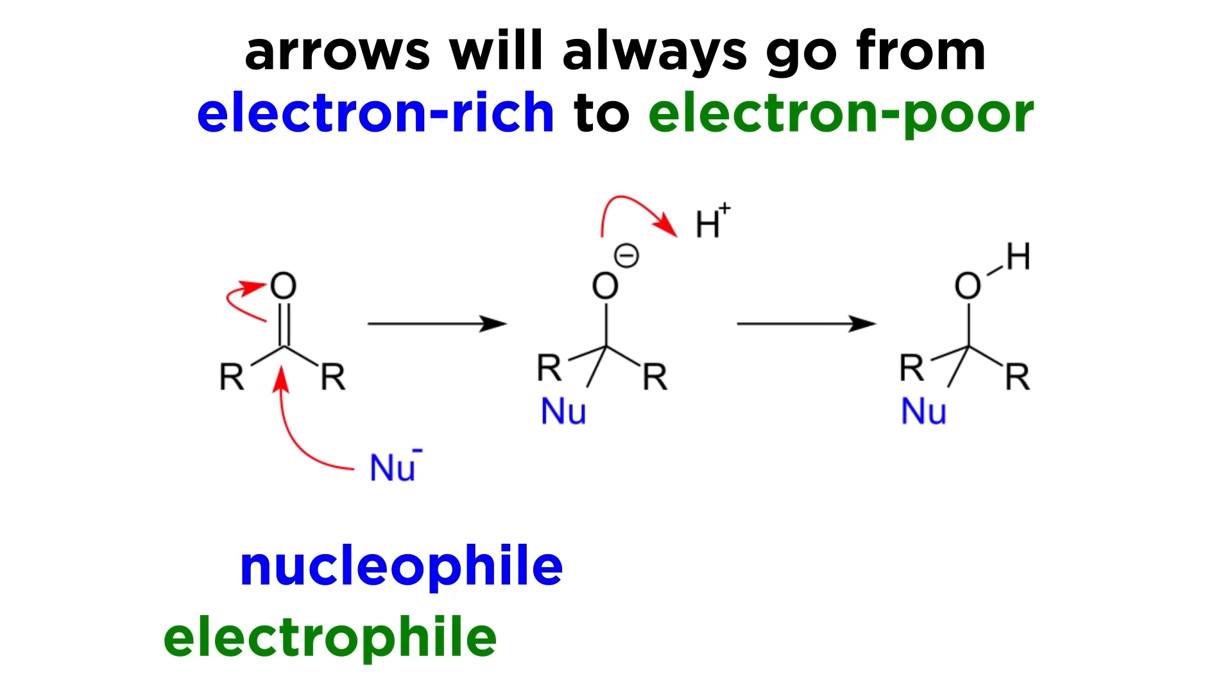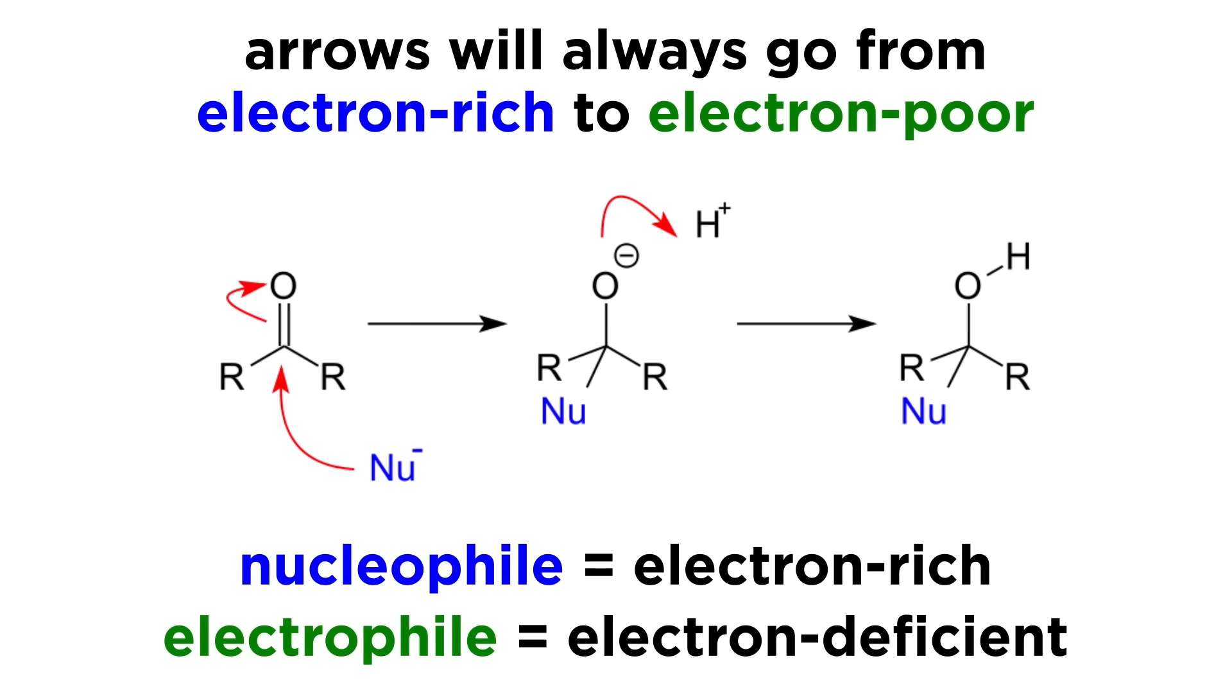Other words we can use to describe this are nucleophile and electrophile. Nucleophiles are electron-rich and they do the attacking. Electrophiles are electron-deficient and they get attacked. So arrows go from nucleophile to electrophile.